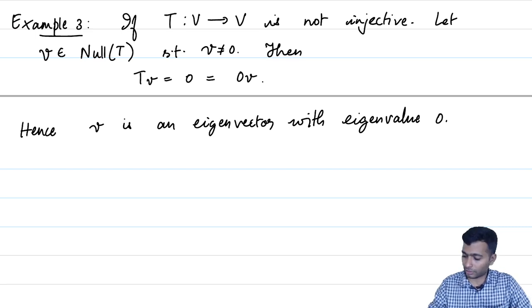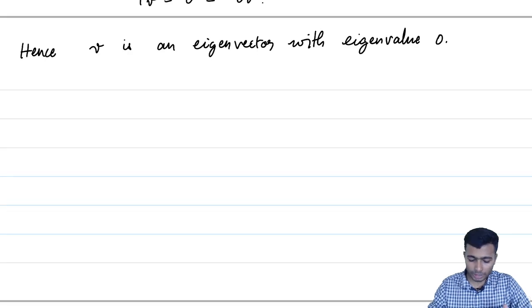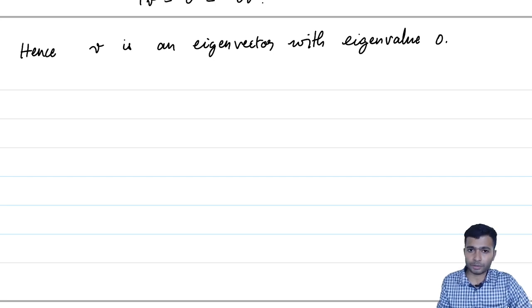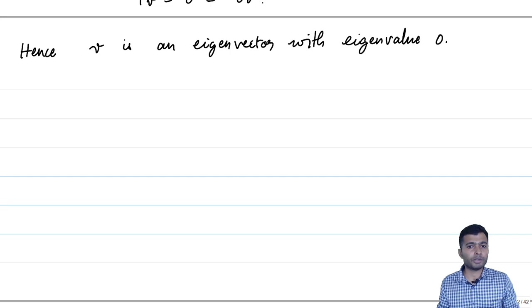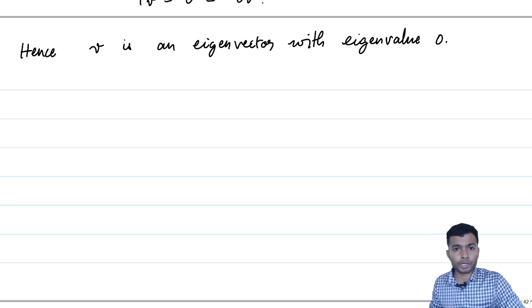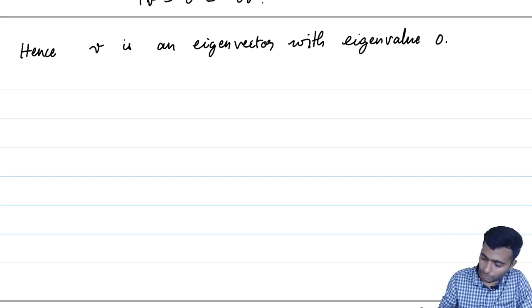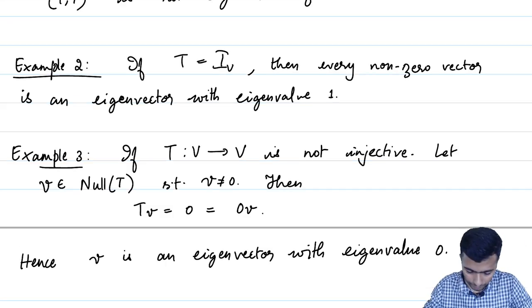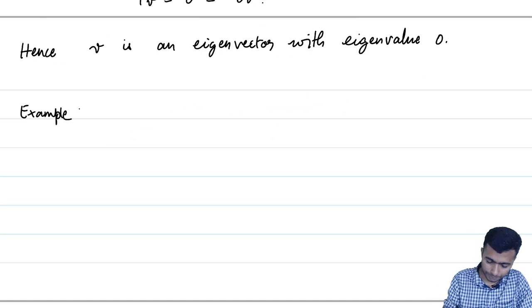A good exercise to think over: show that a linear transformation is invertible if all eigenvalues are non-zero. Let us look at more examples.